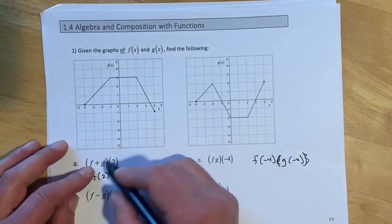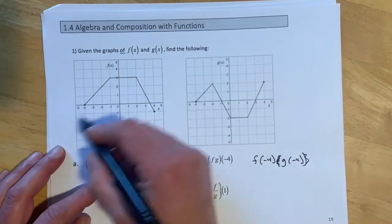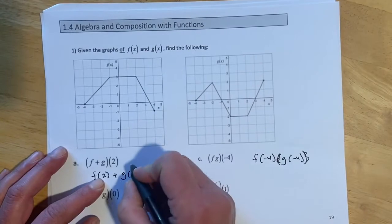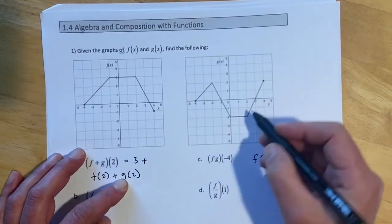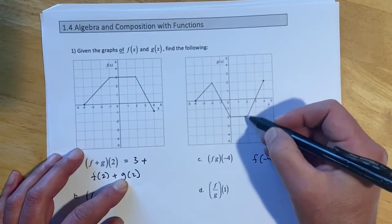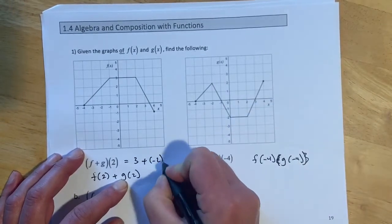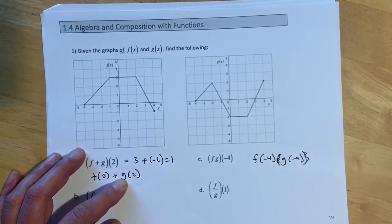This time we're doing it from a graph. So we're going to look for f of 2, which looks like it is 3. Plus g of 2, and this one's g, so g of 2 is negative 2. So it looks like that one would be 1.